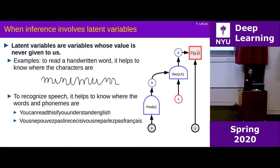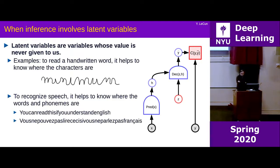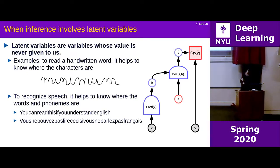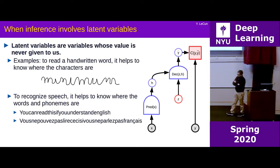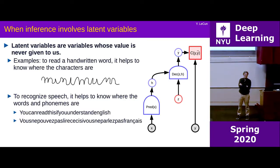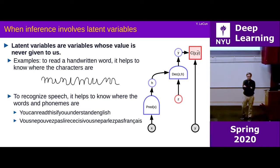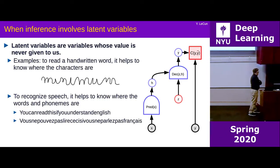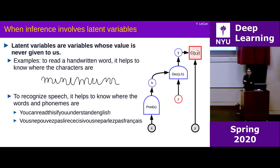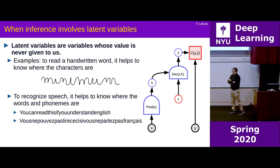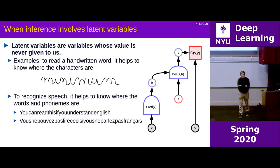A particularly interesting type of energy-based model involves latent variables. A latent variable EBM depends not just on the observed variable X and the predicted variable Y, but also on some extra variable Z whose value nobody tells you. You build the model so that if you knew the value of the latent variable, the inference problem would become easier. For example, in handwriting recognition, if you know where the characters are, reading a word becomes much easier.